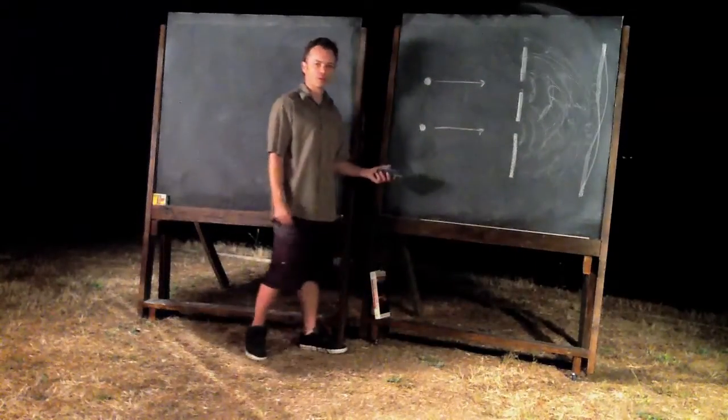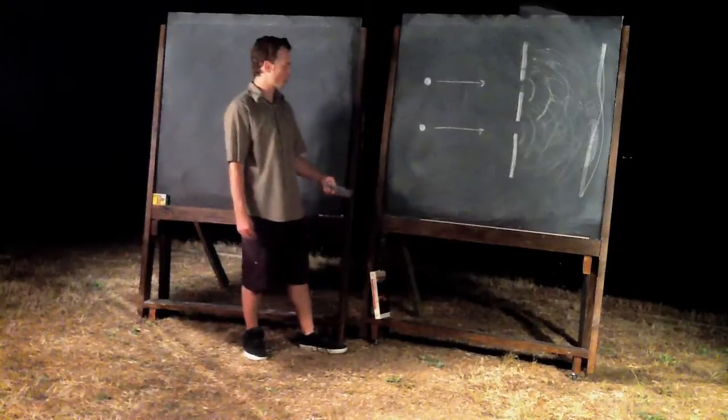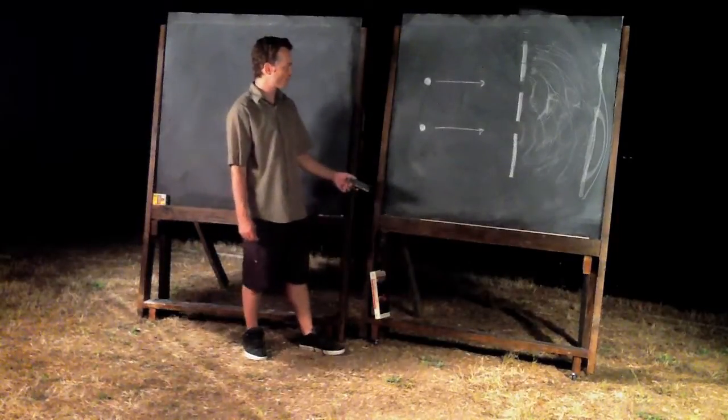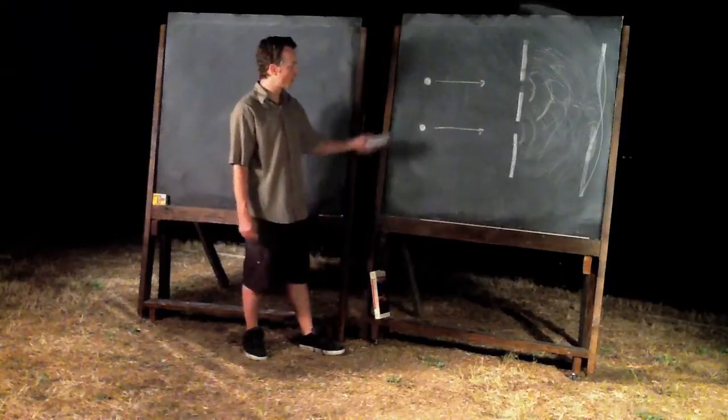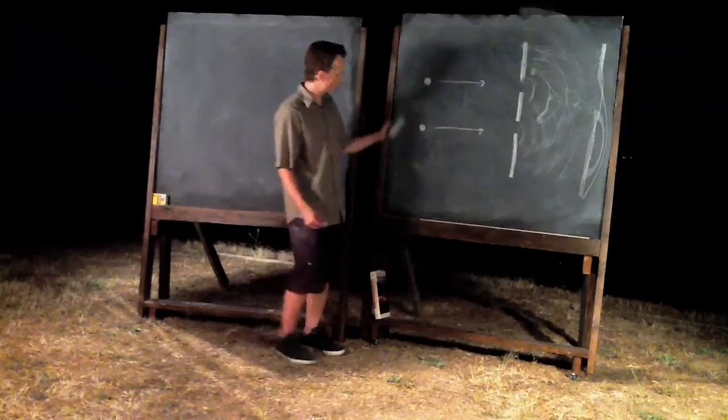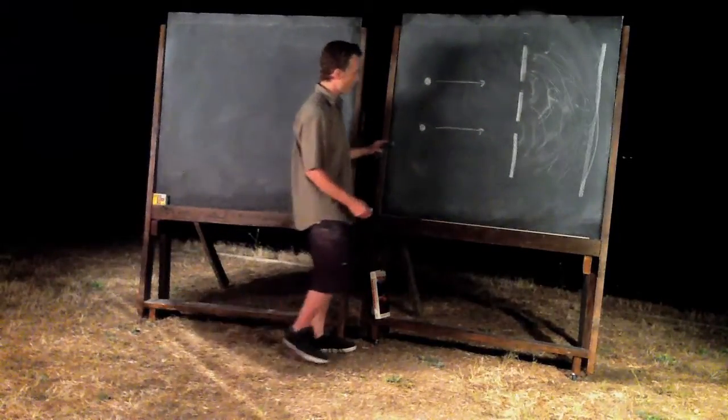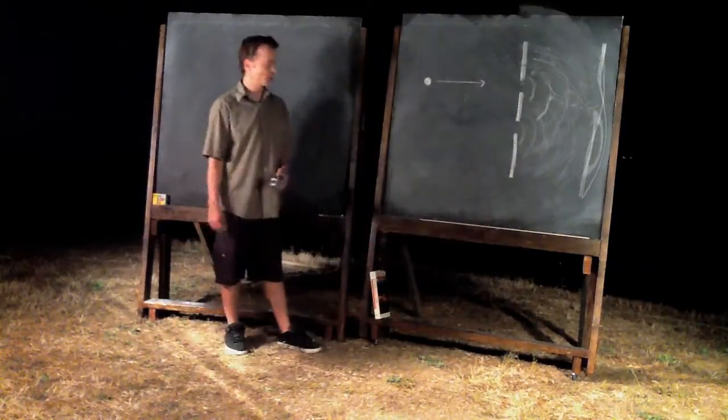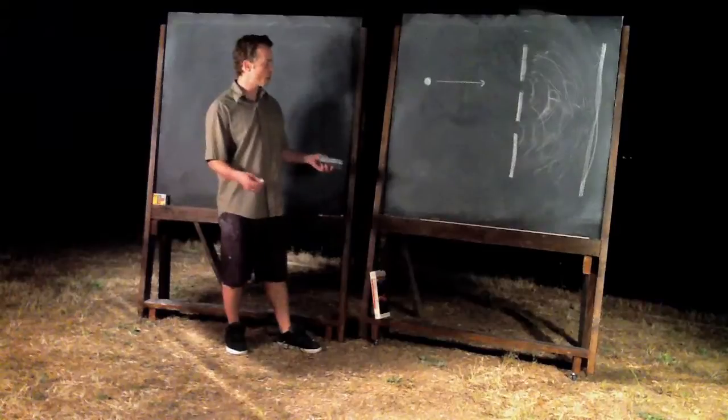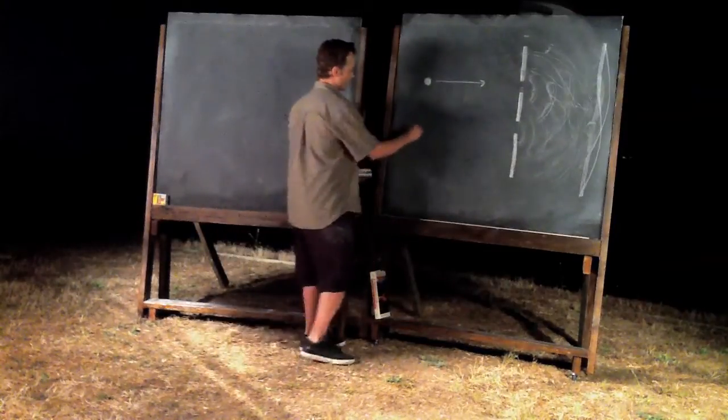When you do an experiment with subatomic particles like electrons or photons, you get this wave phenomena with two particles and even with one particle. This is part of the bizarre behavior of quantum mechanics.